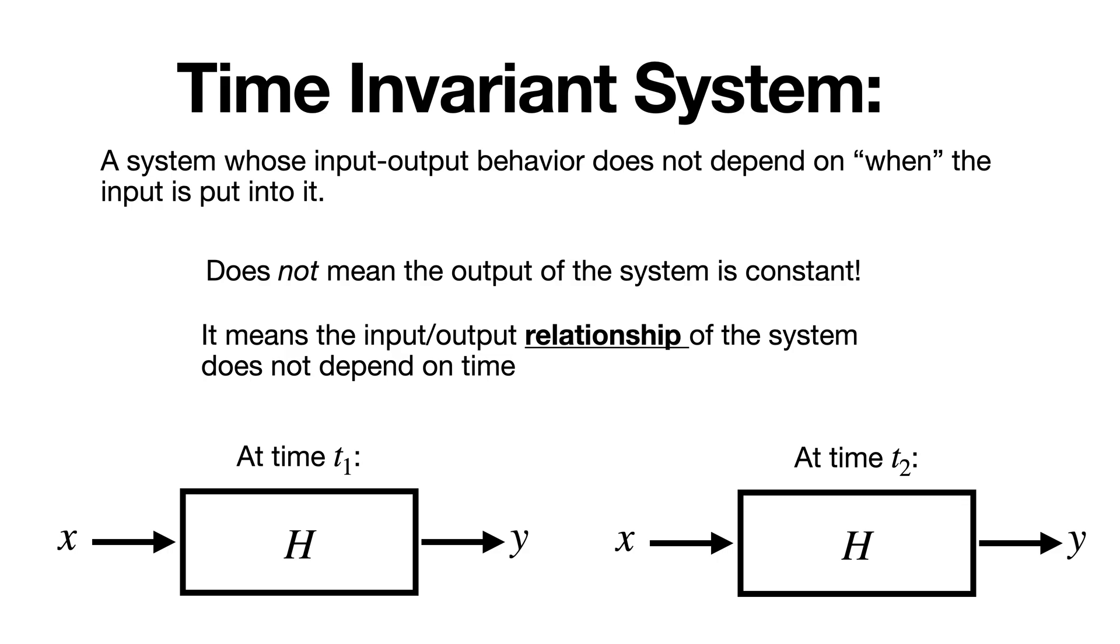In other words, knowing how the system behaves for an input at one time tells you how it will behave for that same input any other time, including the future or the past. This makes analyzing systems easy because we can apply what we learn from looking at the system at one point in time to many or any others.